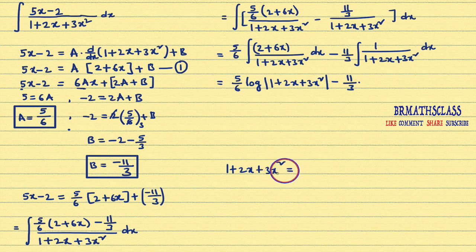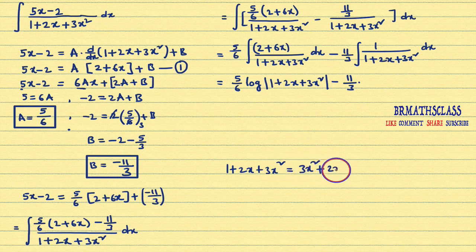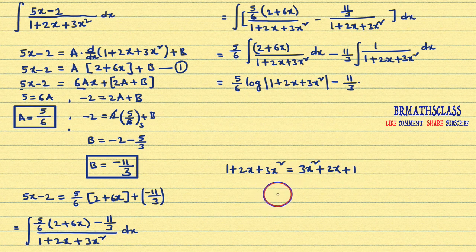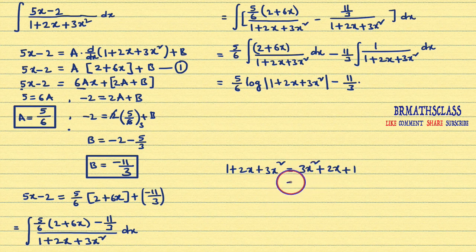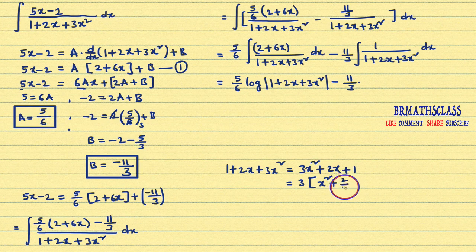It is not in the right order, so I will rewrite it: 3x² plus 2x plus 1. First, we ensure the x² coefficient is 1. Here the x² coefficient is 3, so we take 3 common: 3 into (x² plus (2/3)x plus 1/3).